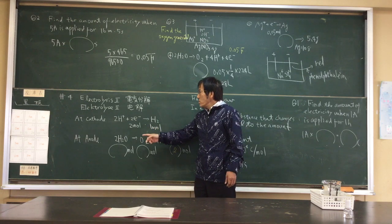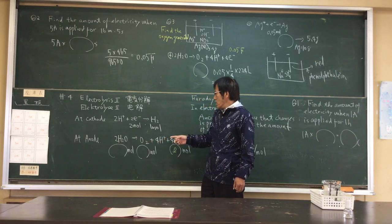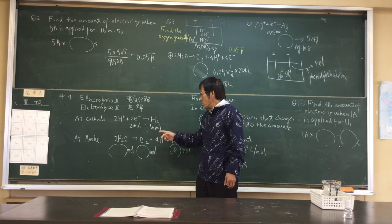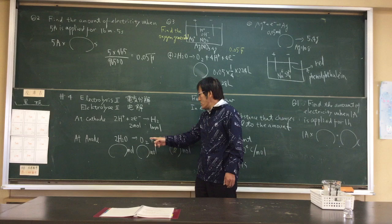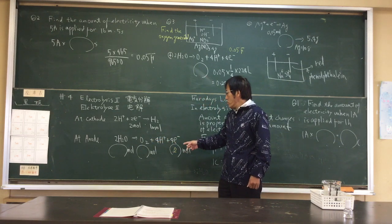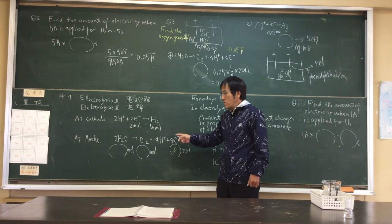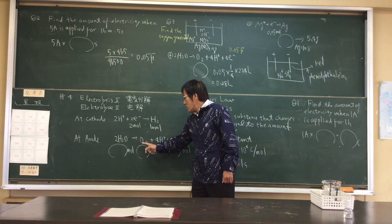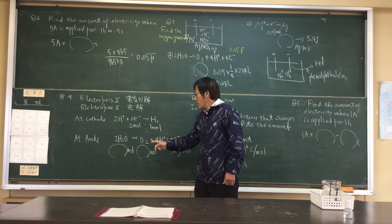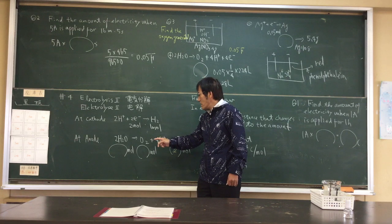At anode, water is oxidized to produce oxygen. Even two more electrons to produce oxygen. What more is oxygen generated?